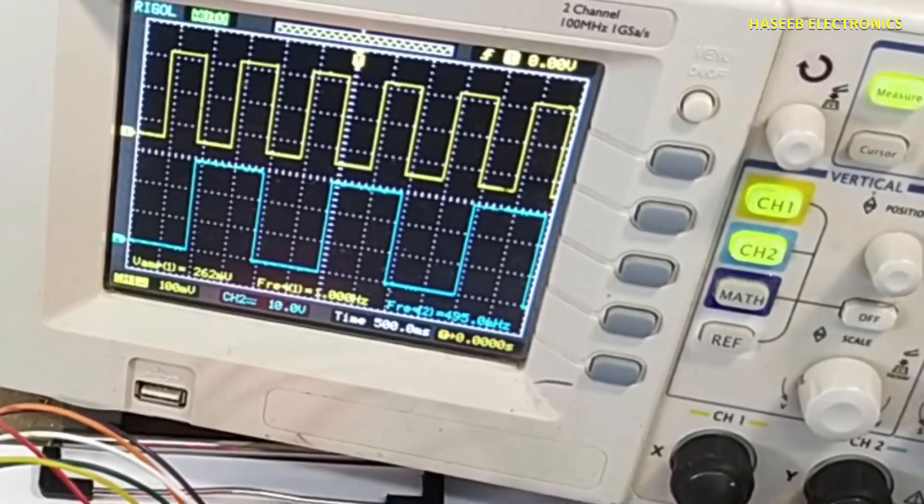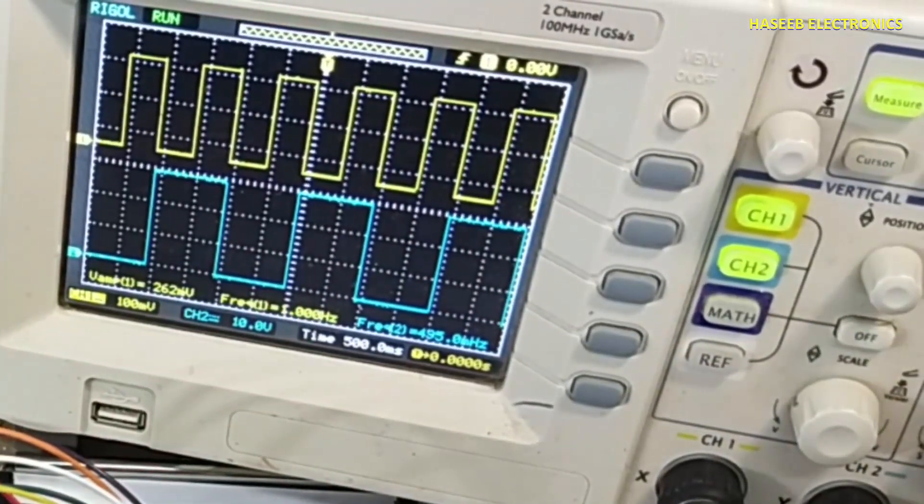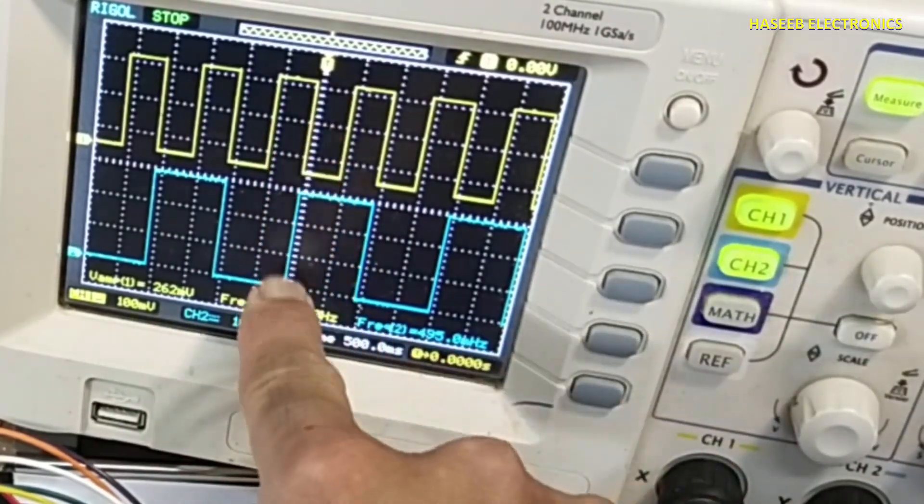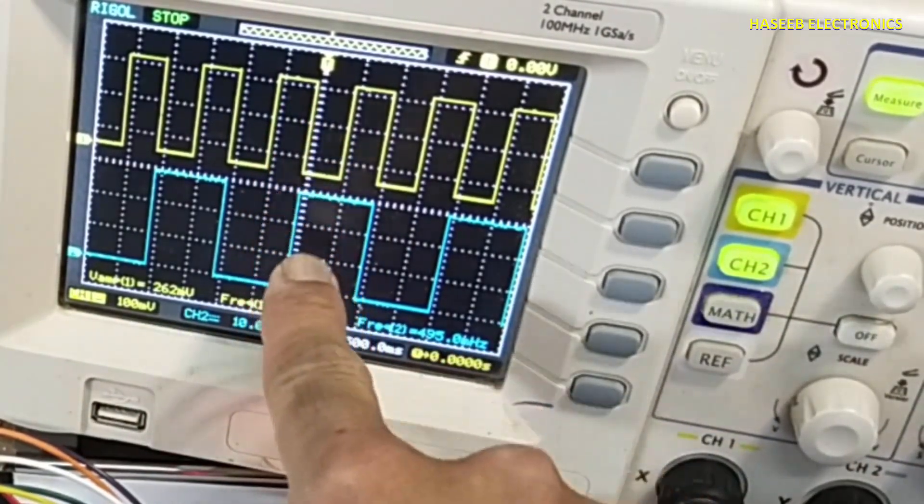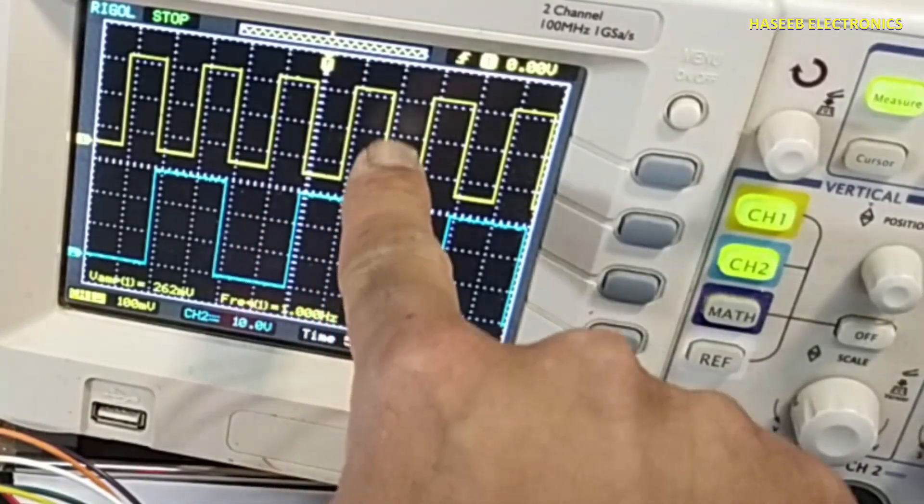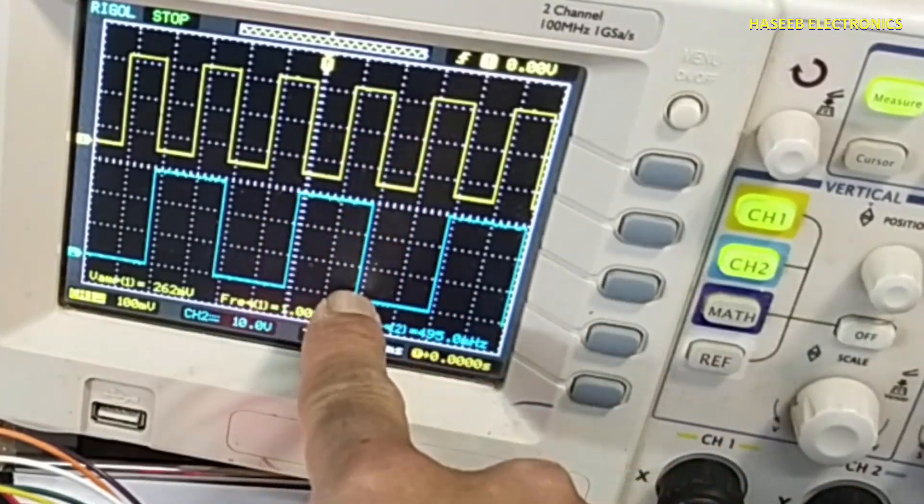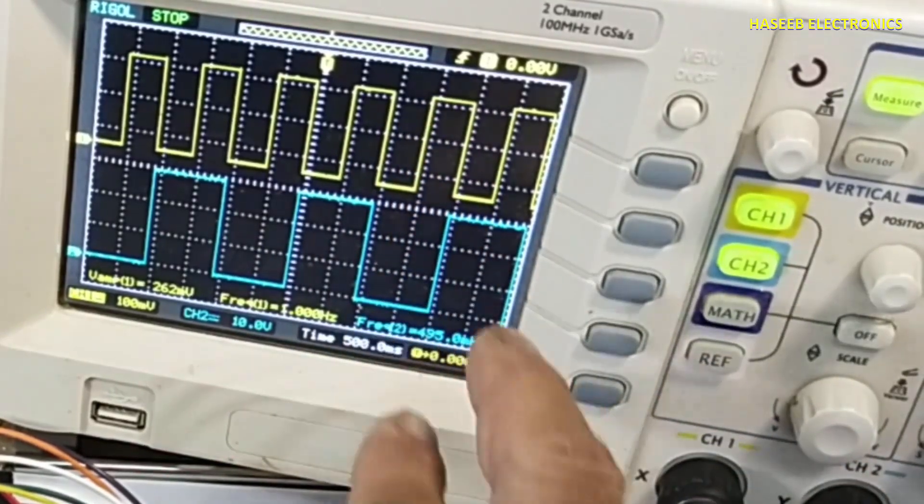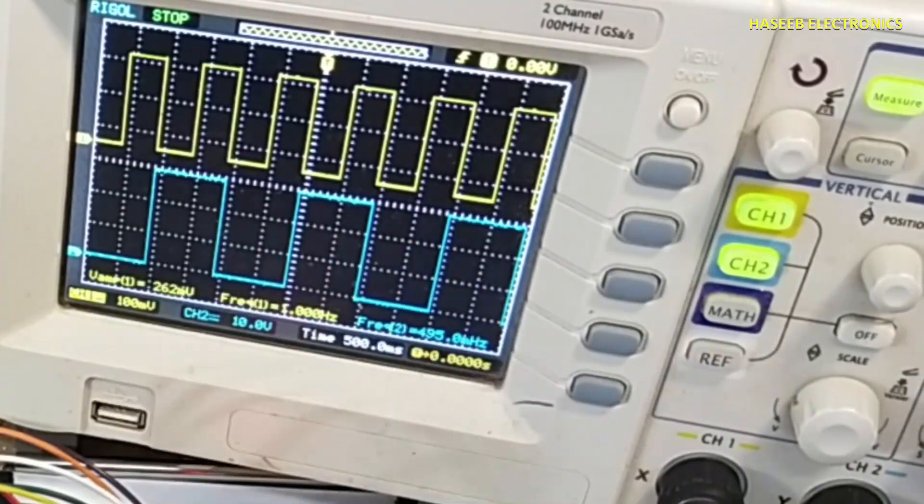At first stage, from here, from this falling edge, this output is now active. And at the next falling edge, this output is low. At next falling edge, this output is high again. So it will toggle at each falling edge.